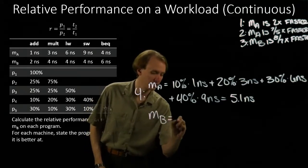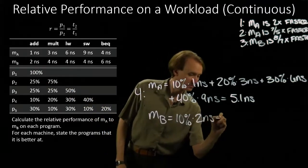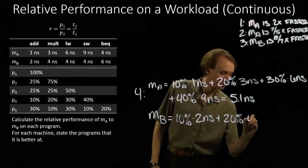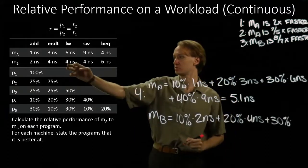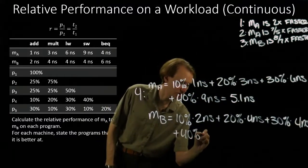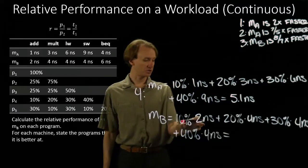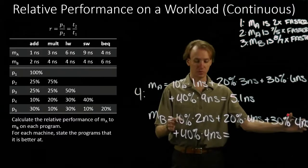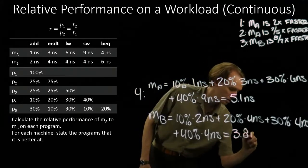For machine B on program four: 10% add at two nanoseconds, 20% multiply at four nanoseconds, 30% load word at four nanoseconds. That gives 0.2 + 0.8 = one nanosecond, plus 1.2 = 2.2, plus 1.6 = 3.8 nanoseconds on average.